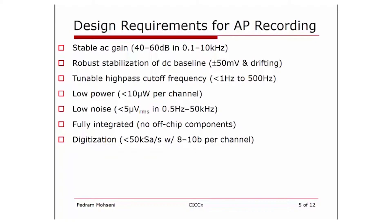Low power is essential — the current trend is less than 10 microwatts per channel. Low noise: 5 microvolts RMS or less within a large bandwidth up to 50 kHz for measurement. A fully integrated design with no off-chip components is required, along with A-to-D conversion per channel, typically less than 50 kilo-samples per second sampling frequency and 8 to 10 bits of resolution per channel.